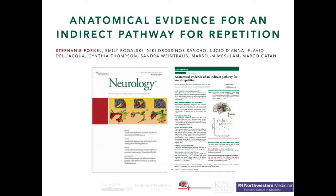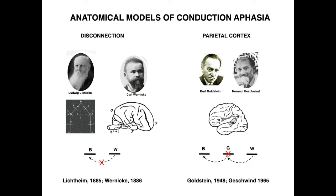Thank you very much for inviting me to give a presentation. I'm thrilled to talk about our latest results on repetition. So why are we interested in repetition and what do we know about repetition? The classical model is that repetition is a joint function between what is called Wernicke's area in the superior temporal gyrus and Broca's area in the posterior inferior frontal gyrus, and they're connected by the arcuate fasciculus.